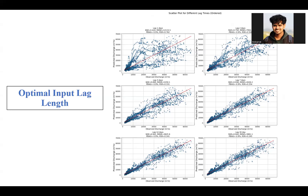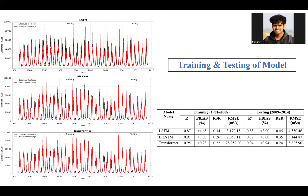Multiple lag lengths were tested and 14 days was found to be a good balance, with lower PBIAS and RMSE values, and an NSE value of 0.942 which is very close to 1. Training and testing of the three deep learning models are shown along with their performance metrics in the table below. From the graph and the table, the best performer is the transformer, BiLSTM is competitive, and LSTM is the least competitive.